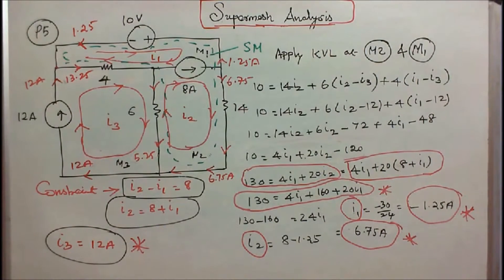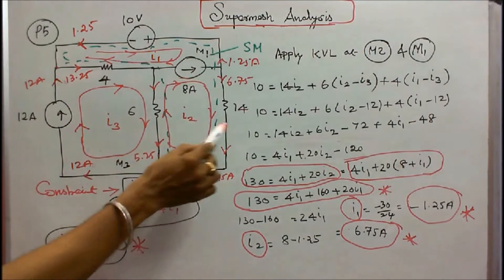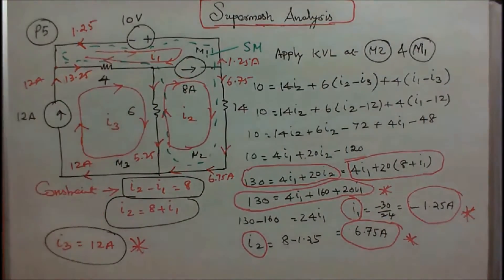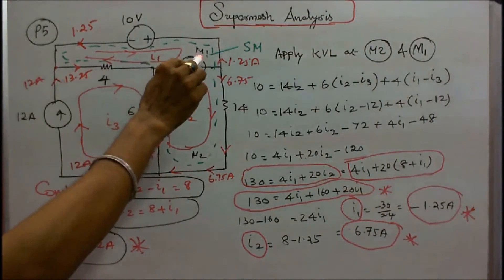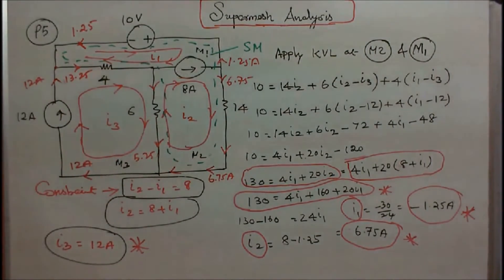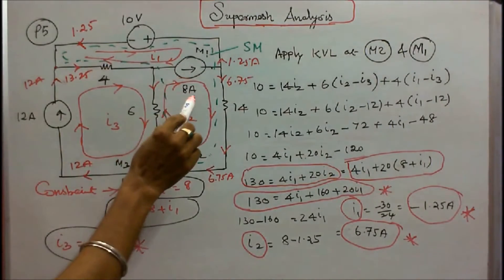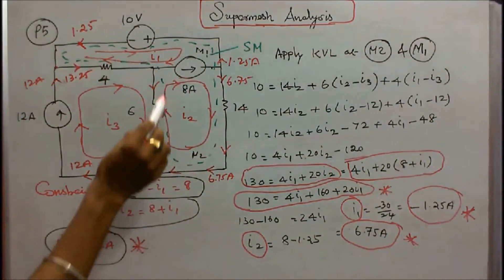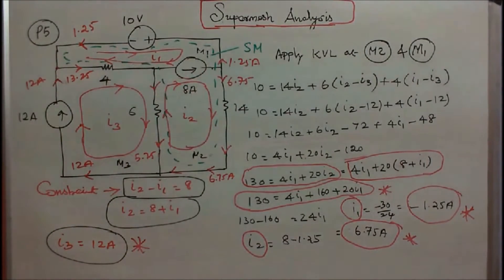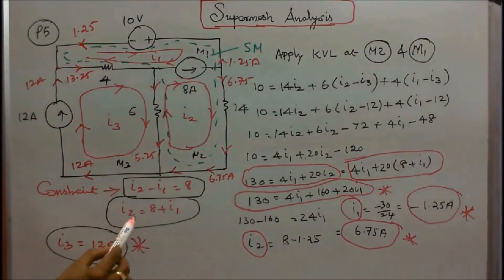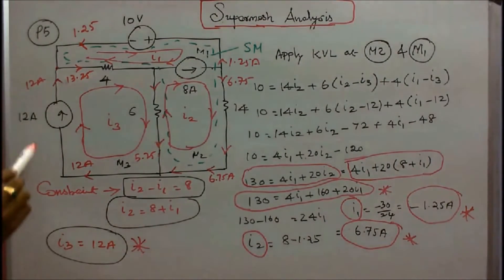Problem number 5: three resistors — 4 ohm, 6 ohm, 14 ohm — two current sources of 12 amps and 8 amps, and one voltage source of 10 volts, are connected as shown in the figure. The question is: find mesh currents I1, I2, I3. The 8 amp current source is connected between M1 and M2, so this is considered a super mesh. The constraint is I2 minus I1 equals 8, or I2 equals 8 plus I1. Here I3 is equal to 12 amps.